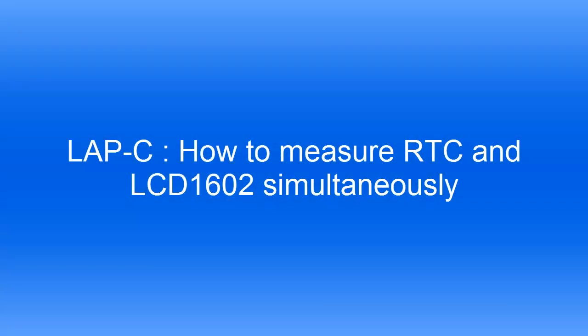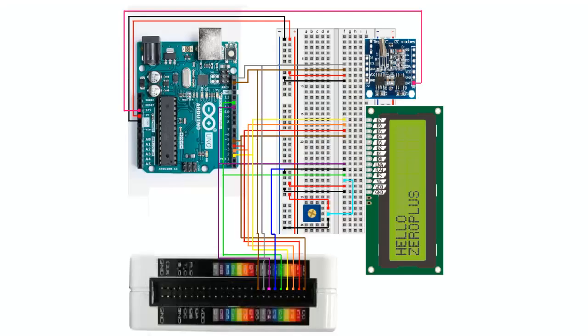This tutorial demonstrates how to measure a real-time clock on an LCD1602 simultaneously. Connect the pins of the DS1307 real-time clock module and LCD1602 to the Arduino Uno and logic analyzer.